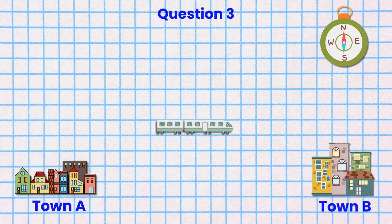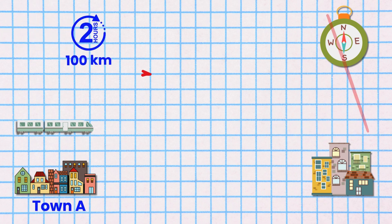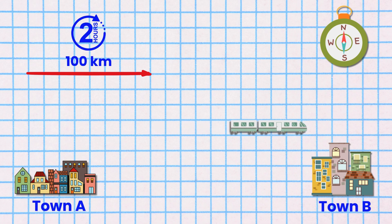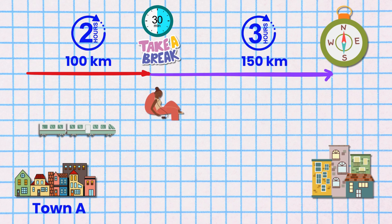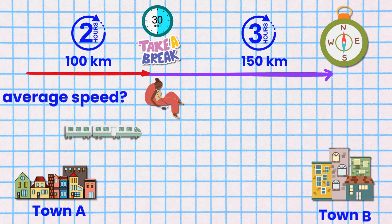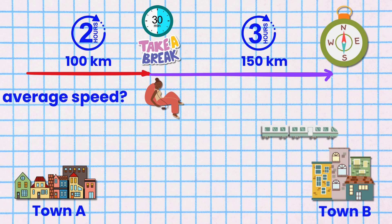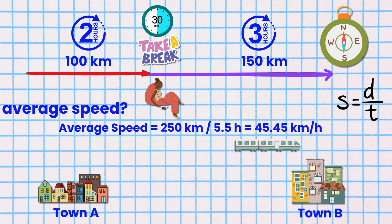Question 3. Mole travels by train from town A to town B. She covers 100 kilometers in 2 hours, takes a 30-minute break, then travels another 150 kilometers in 3 hours, all in the same direction. What is her average speed for the entire trip? Average speed is total distance divided by total time, which equals 250 kilometers divided by 5.5 hours, and that equals 45.45 kilometers per hour.